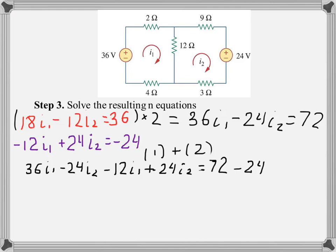We can see that minus 24I2 and plus 24I2 are cancelled out. And at the end we'll get 36 minus 12 is 24I1 equals 72 minus 24, which is 48. And I1 is 48 over 24, which is 2 amps.